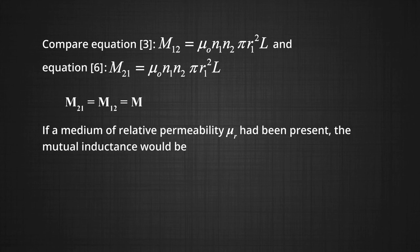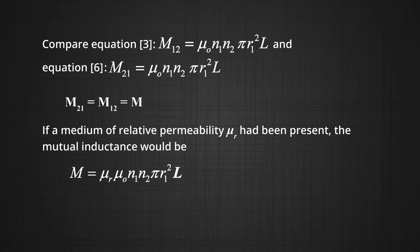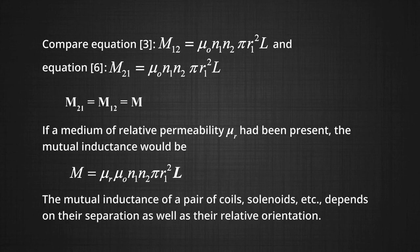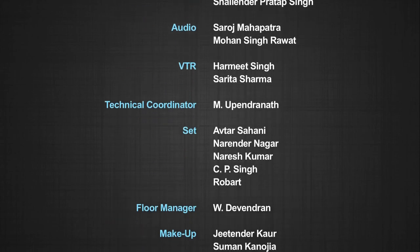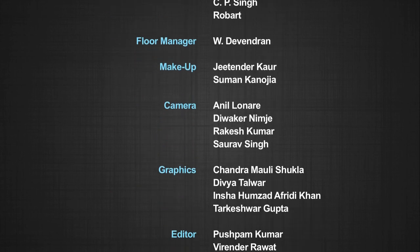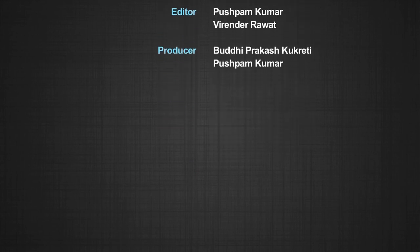If the medium of relative permeability mu_R is present, the mutual inductance would be M equals mu_R mu naught N1 N2 pi R1 squared L. It is also important to know that mutual inductance of a pair of coils or solenoids depends on their separation as well as their relative orientation. After learning about mutual inductance, we will be doing its application in transformers in the upcoming modules. Thank you.